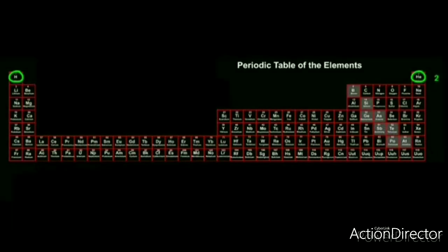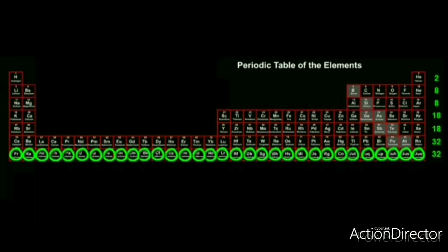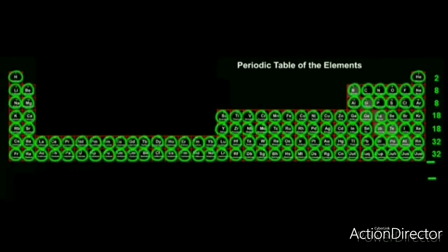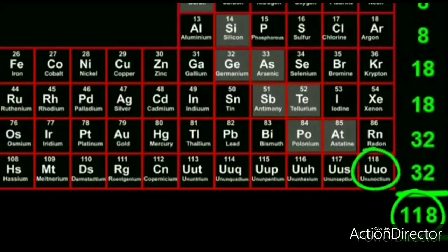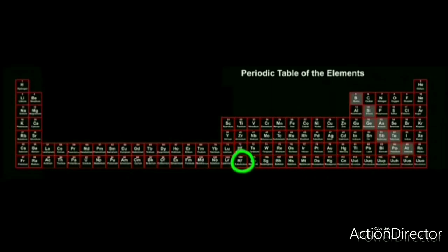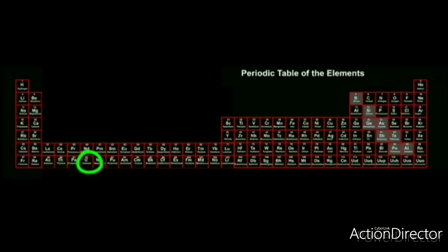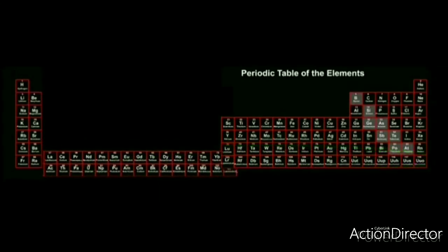How many elements are there per row? 2, then 8, then 8, then 18, again 18, 32, and 32. So combined, there are 118 elements placed in the periodic table. Now you might be thinking — earlier I said there are 92 elements. Do not get confused. There are actually 92 elements that exist in nature, and the rest are invented by scientists in laboratories, around 1940. So those elements are artificial. We can say there are 92 natural elements and the rest are artificial elements in the periodic table.